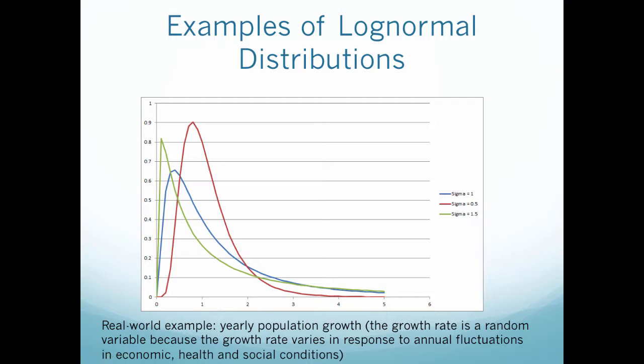A real world example of a lognormal distribution would be yearly population growth. The growth rate is a random variable because the growth rate varies in response to annual fluctuations of economic, health, and social conditions.